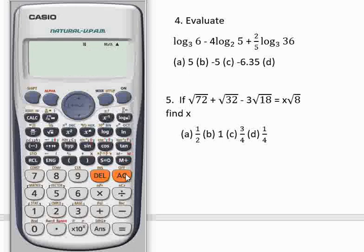You clear it. And number 5 says, if √72 + √32 - 3√18 = x√8, find x. So let's do that quickly. That was a time. We have square root of 72, you press the forward button. The essence of pressing the forward button is to tell the calculator that you are no longer inside the square root. Then plus square root of 32, forward button again, minus 3 square root of 18.